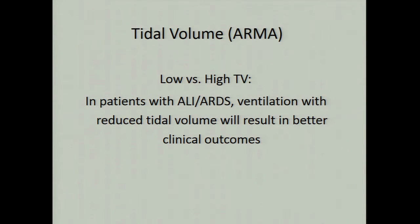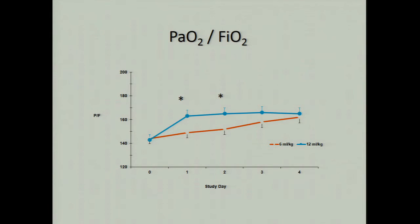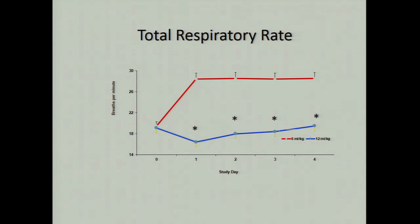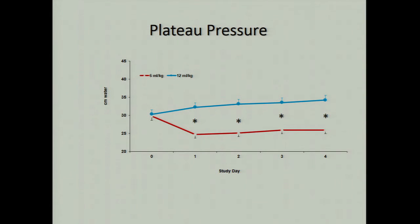This landmark trial randomized patients with ARDS to reduced versus normal tidal volumes. The PF ratio of patients is shown — blue for high tidal volume, red for low tidal volume. The hypothesis was that low tidal volumes are beneficial. However, those patients were hypoxic. Patients on low tidal volume were panting, with high respiratory rates compared to the high-tidal-volume group. Their plateau pressures were lower, but for the first few days they were hypoxic and tachypneic.